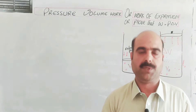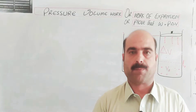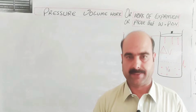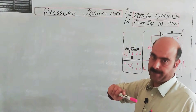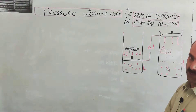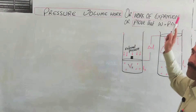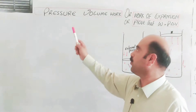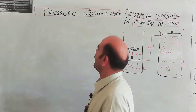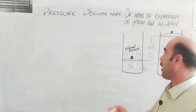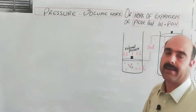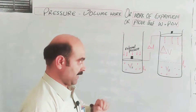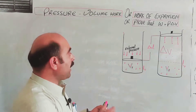Bismillahirrahmanirrahim. Dear students, Assalamu Alaikum. Today we have a new topic from thermochemistry, chapter number 11, class first year. A very important topic: pressure-volume work, or work of expansion. W is equal to P delta V. Students, important questions come in exams: what do you know about pressure-volume work? Explain work of expansion. Prove that W is equal to P delta V.